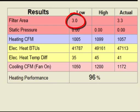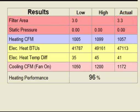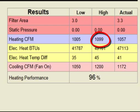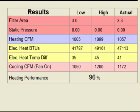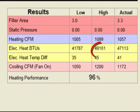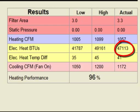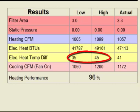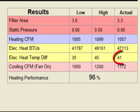Filter area low is 3 square feet; the actual filter area is 3.3 square feet. The minimum acceptable heating CFM is 1,005 cubic feet per minute, and the maximum is 1,099 cubic feet per minute — this system is moving 1,057 cubic feet per minute. The electric heat BTUs should be between 41,787 and 49,161 BTUs; this system is producing 47,113 BTUs. Electric heat temperature difference should be between 35 and 45 degrees; this system is producing a 41 degree temperature difference.